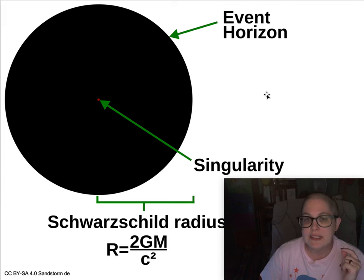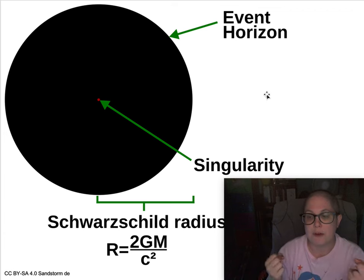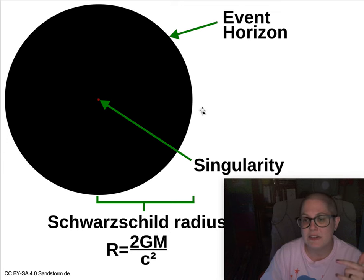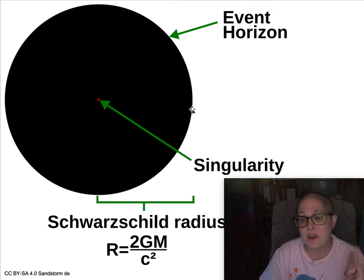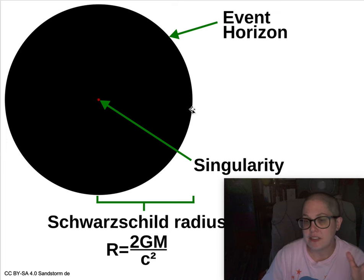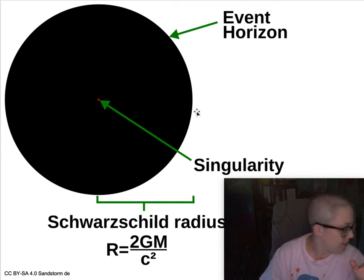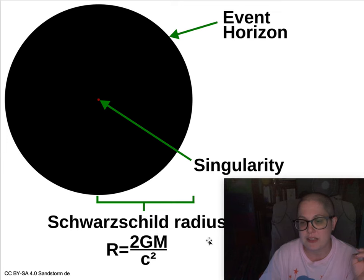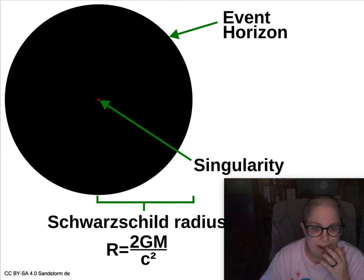The closer you get to the black hole, the stronger gravity is and the more speed you need to escape. The escape speed gets higher and higher the closer you get. At some point, the escape speed equals the speed of light. Since light is the fastest thing in the universe, once something passes the event horizon it will never move fast enough to escape the gravitational pull of the singularity at the center. This is the event horizon — the point of no return — the surface of the black hole.